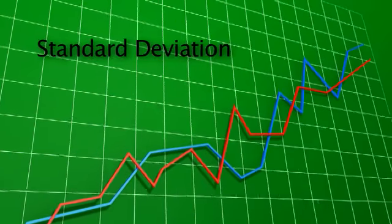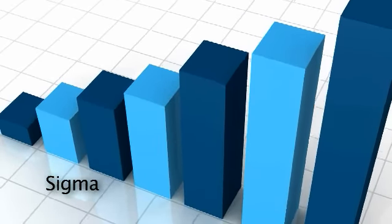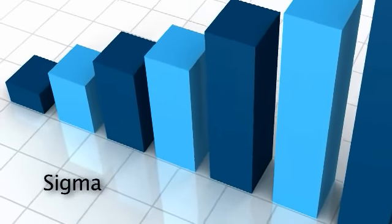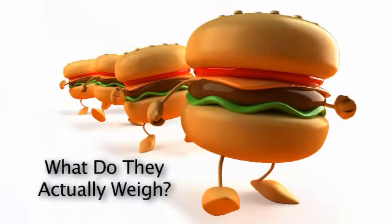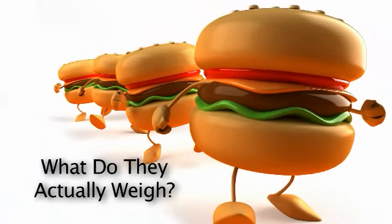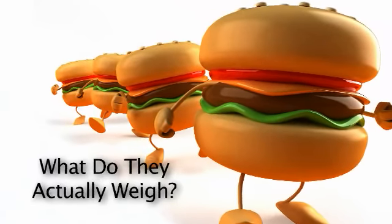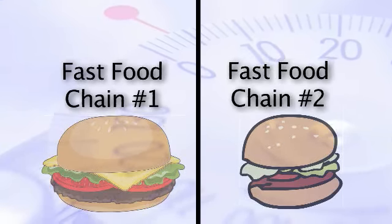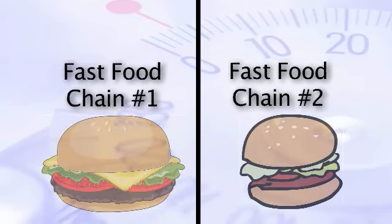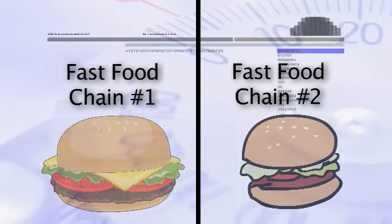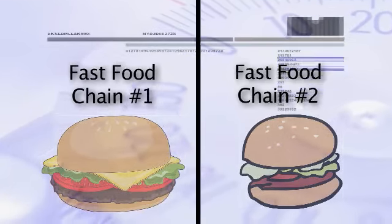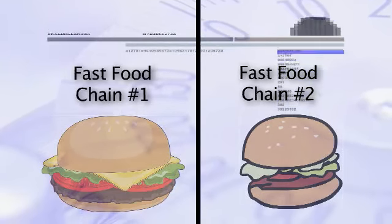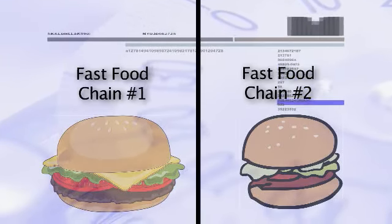We use this to measure process performance. Sigma is generated when we gather and analyze data using statistics. For example, the weight of a quarter pound hamburger. We assume they weigh a quarter pound when we buy one, but what do they actually weigh? If we took sample weights of quarter pounders from both chains and plotted the data, we could determine the standard deviation — how much variation there is in the weight of a typical quarter pound hamburger from the average weight of all the quarter pounders sampled.